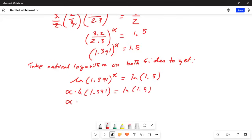Using our calculator, we will find out the value of ln of 1.391. ln is the natural logarithm. Press the ln button on your calculator and inside the parenthesis type in 1.391. That value is 0.330. And ln of 1.5, press the ln key again and inside the parenthesis 1.5. You get 0.405.